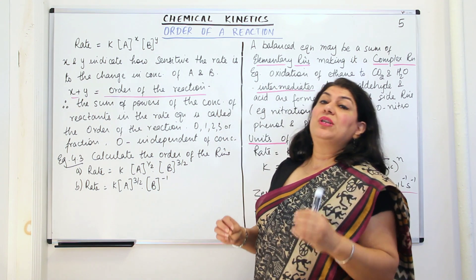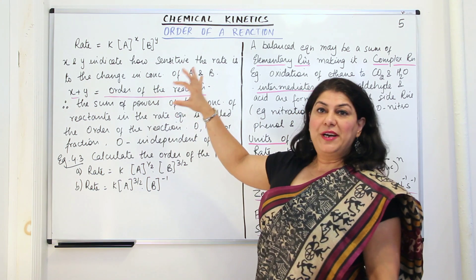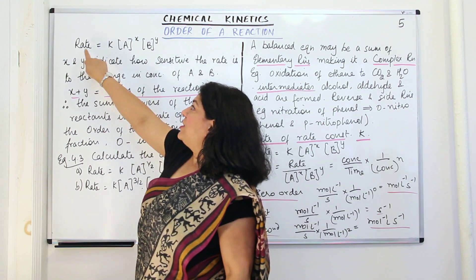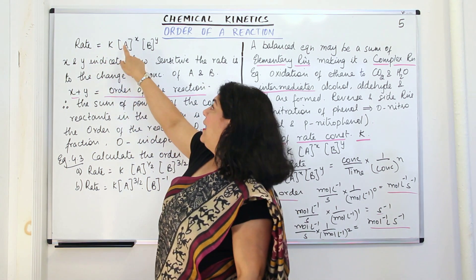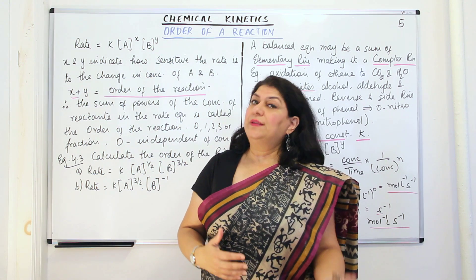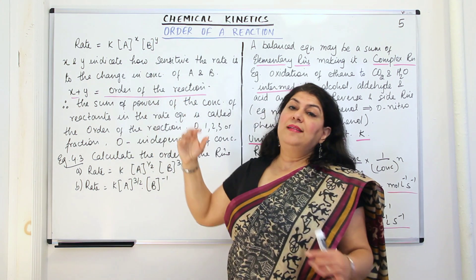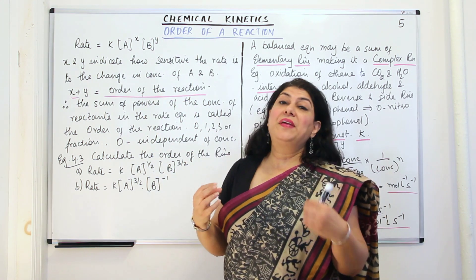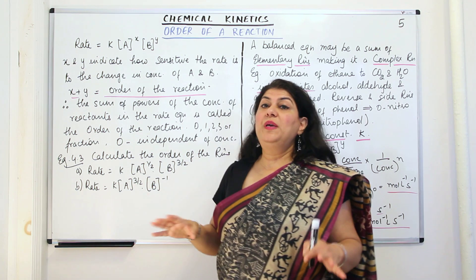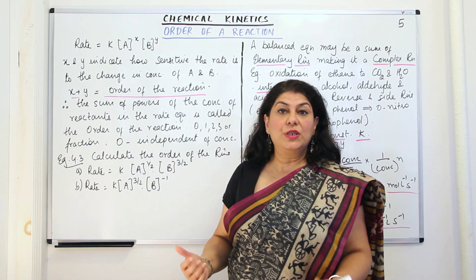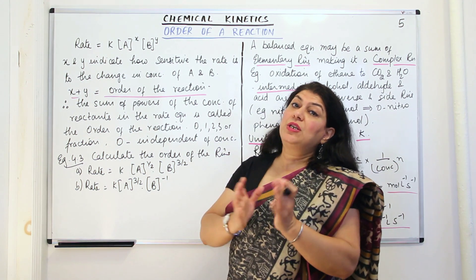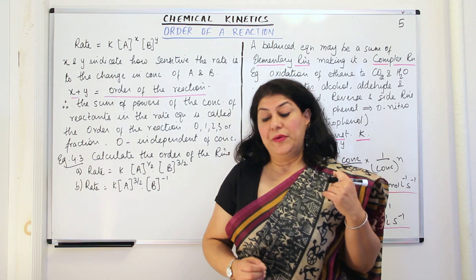In the previous video I talked about the rate law and I told you that the expression, the rate equation or the expression for rate of a reaction is: the rate of a reaction is equal to the rate constant K into the concentrations of A and B, where A and B are the reactants, raised to certain powers. These powers indicate how sensitive the reaction is to that particular reactant. These powers may not be equal to the stoichiometric coefficient; they only depend on how much the reaction depends on the change in concentration of that particular reactant.